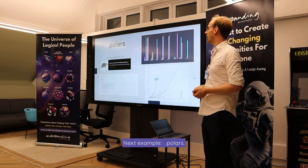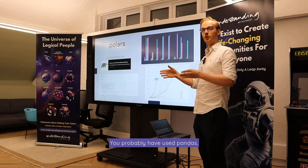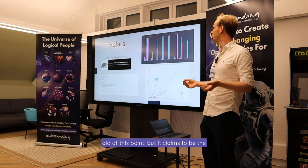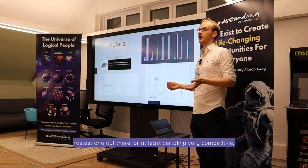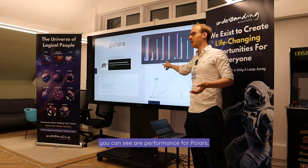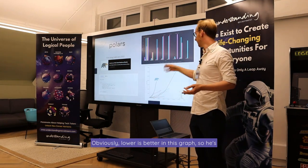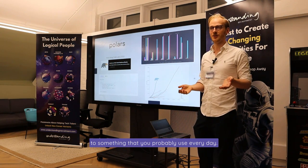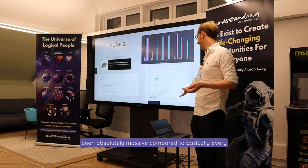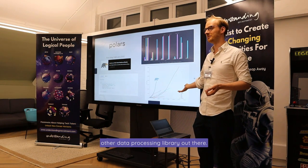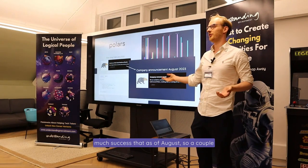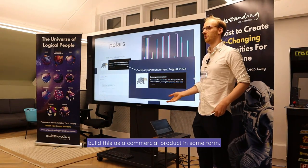Next example is Polars — it's a data frame library. You've probably used pandas. Polars is an emergent one, about two and a half years old, and it claims to be the fastest out there, or at least very competitive. On the graph, the blue bars are pandas and the little purple bars are Polars performance — lower is better, so it's making a strong case as a competitor. It's usable from both Python and Rust, and its GitHub stars growth has been massive. It's had so much success that as of August, a company was started to build it as a commercial product.